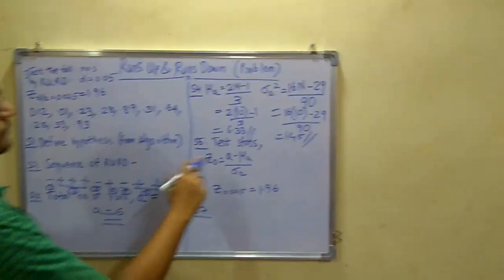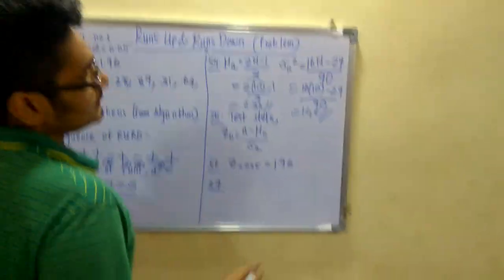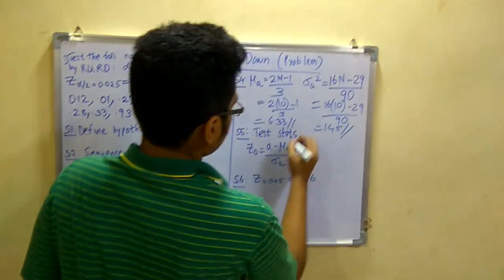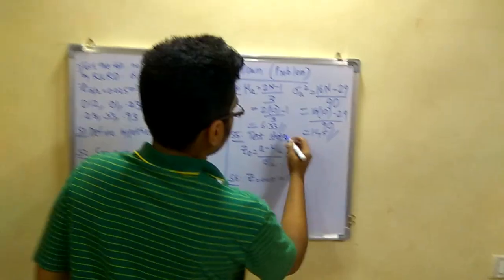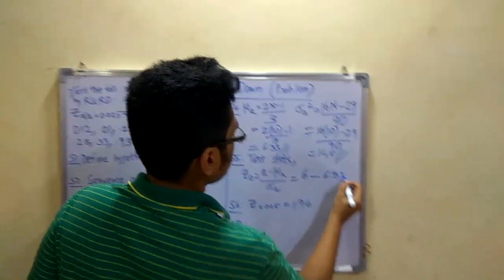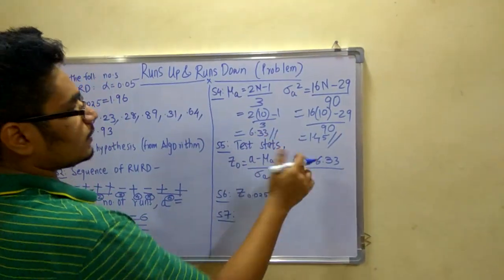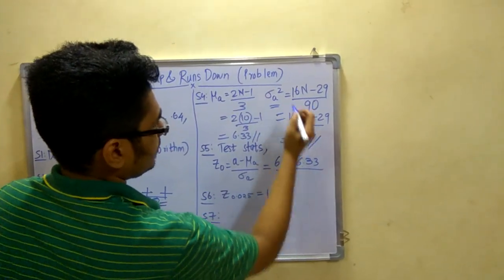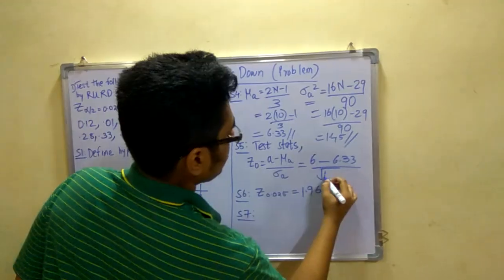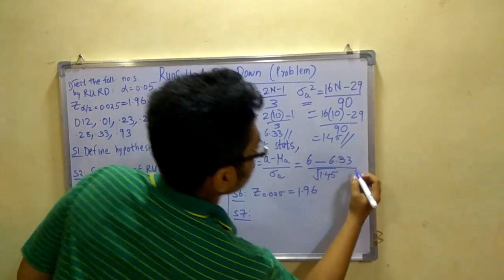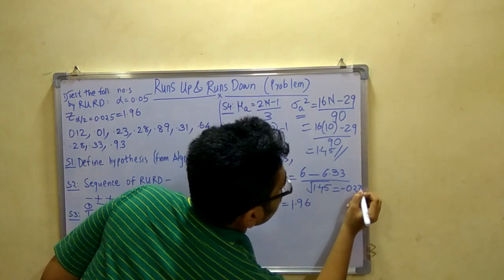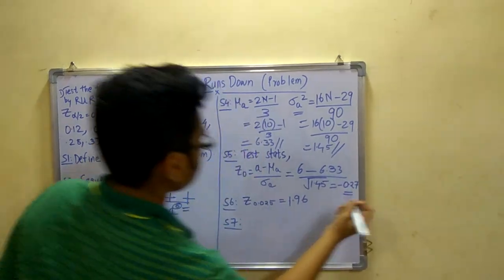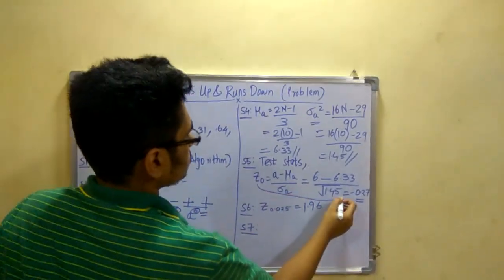After that you have to calculate the test statistic, that is the z0. For that, a, that is 6, minus 6.33 divided by... Now you have to remember that you have to take the square root of this. Not this number. This is sigma a square. So you will have to write square root of 1.45, which leads to minus 0.27. This is the value of z0.